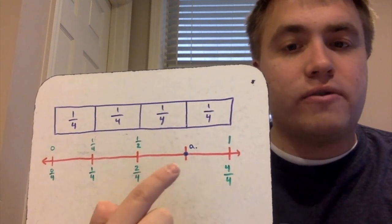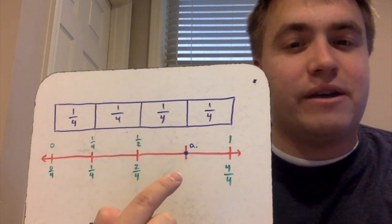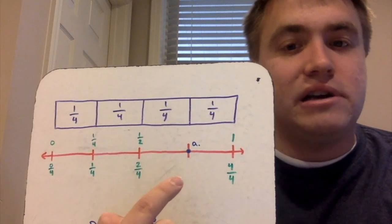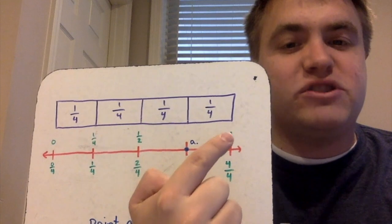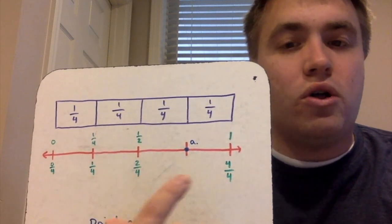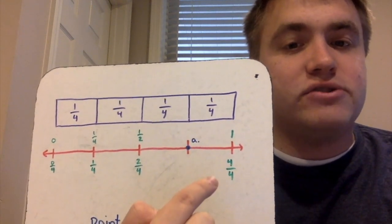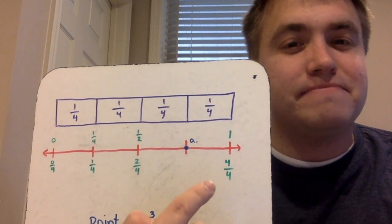If we move over another fourth, I have a dot with an A there — we'll find out about that in just a second. If I move over another fourth, we've reached one, because I have one whole represented here, which also equals four-fourths.